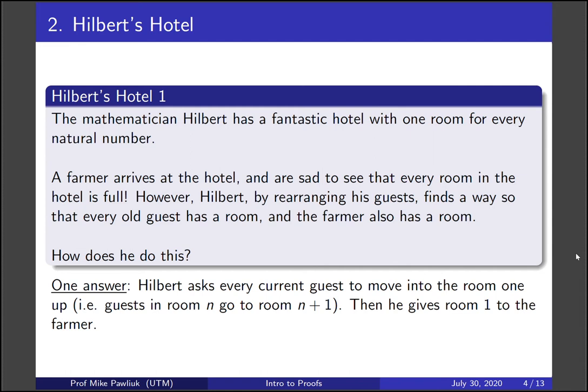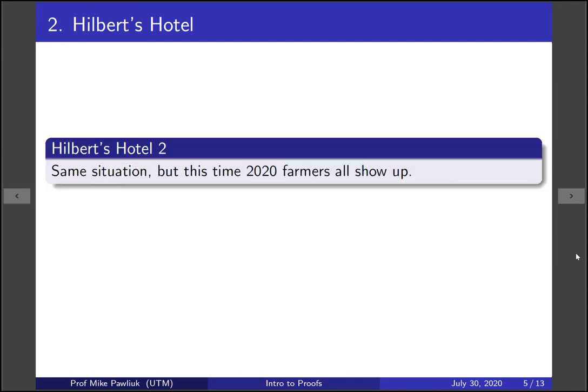Now let's look at a generalization of Hilbert's Hotel. Now imagine the same situation as before, but this time instead of one farmer, 2020 farmers all show up. Is there a way for Hilbert to find room for all of these farmers?